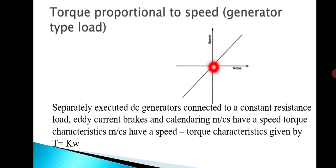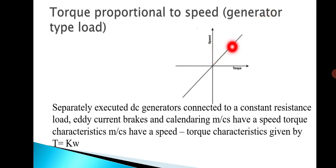In the torque-speed characteristics of this generator type load, torque is proportional to speed up to rated speed, after which it becomes saturated and torque becomes constant. So the torque increases with respect to speed up to rated speed, then it will become constant. This is the torque-speed characteristics of a separately excited DC generator.